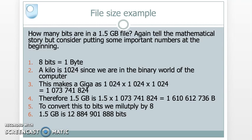So here's another example about file size. How many bits are in a 1.5 gigabyte file? Again, tell the story. But sometimes it's important to put the key facts right up front. For instance, remember eight bits make a byte. This is the binary world. So a kilo is 1024. So we don't make that mistake.